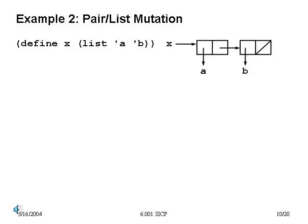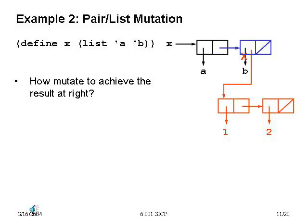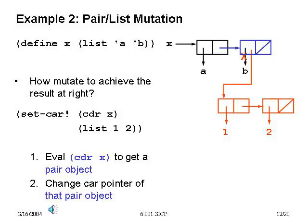In order to use these mutators, we need to know what happens when we mutate a particular structure and what kind of mutation we need to cause a desired change. For example, if x is the list (a b) and we want to change it so the second element's car points to the list (1 2), the expression is `(set-car! (cdr x) (list 1 2))`. We use `(cdr x)` to get to the second part of the list, then `set-car!` to change its car to point to the new list.